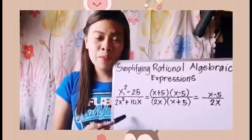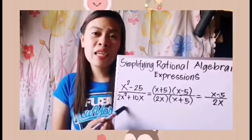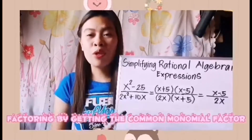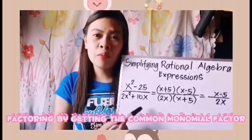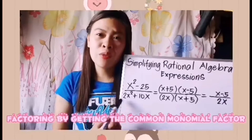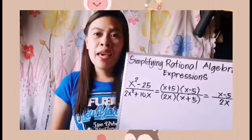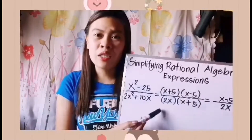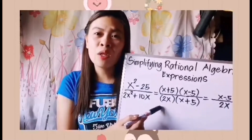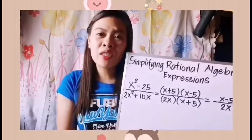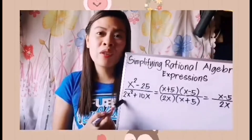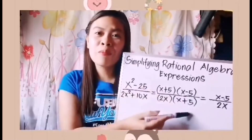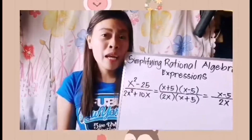Now our denominator is 2x squared plus 10x. The factoring technique we can apply here is factoring by getting the common monomial factor. What is common among the two terms? For the numerical coefficients 2 and 10, the common is 2. For the variables x squared and x, what's common is x with the lowest exponent, which is 1. So we will have 2x as the common polynomial factor. To get the other factor, we divide: 2x squared divided by 2x gives x, and 10x divided by 2x gives 5.